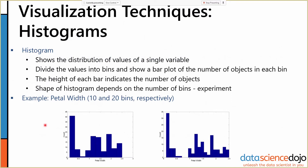One of the most common and popular types of visualization is a histogram. Histograms show the distribution of values of a single variable. We divide the values into bins and then count the number of objects in each bin, and the height of a bar on our graph indicates the number of objects in a given bin. One of the important pieces of a histogram is that the shape of the histogram is going to depend on the number of bins you use.